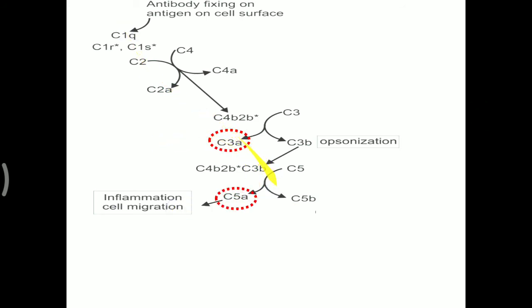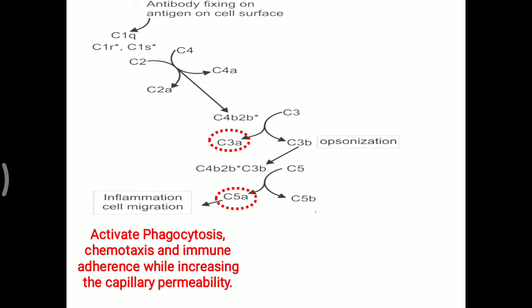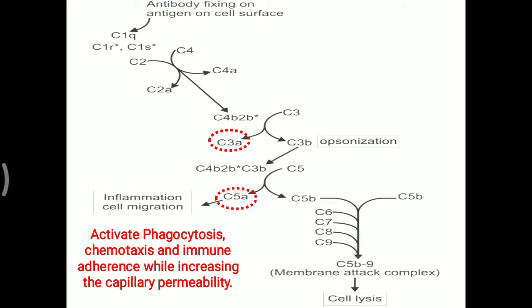C5 is then activated and converted into C5A and C5B. C3A and C5A, produced during activation of the complement system, lead to activation of phagocytosis, chemotaxis, and immune adherence while increasing capillary permeability. C5B leads to membrane attack by combining with C6, C7, C8, and C9, ultimately leading to cell lysis.